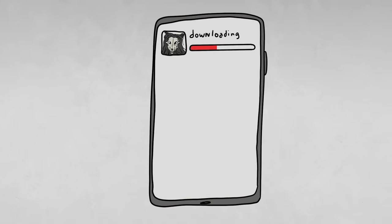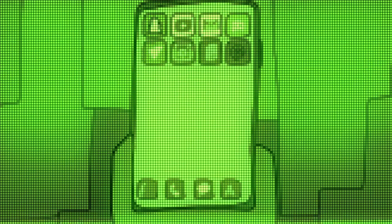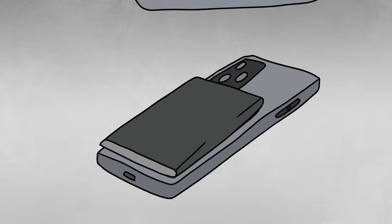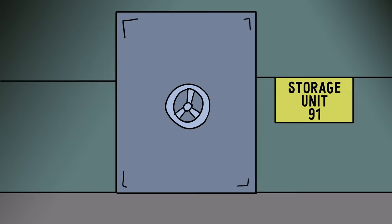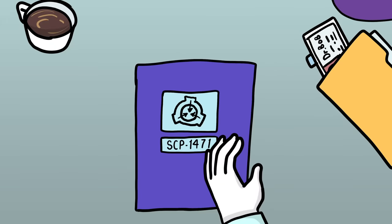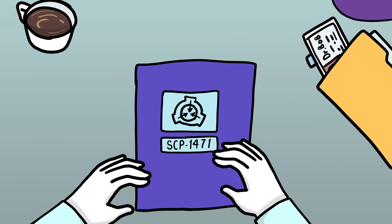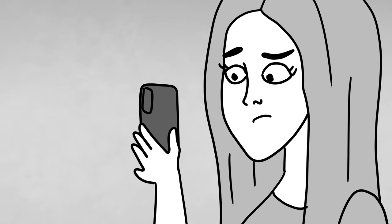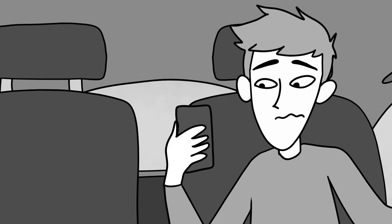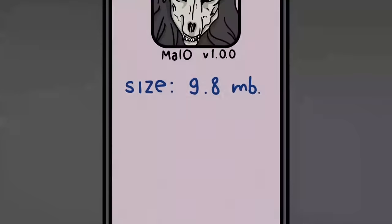All mobile devices that are found to have Mallow version 1.0.0 installed on them are to be confiscated and analyzed for any potential information as to who might have created the application, as well as leads for other devices that may have been infected. Following this investigation, the device's batteries are to be removed and the device placed in Storage Unit 91 at Research Site 45. Additionally, all online application stores for mobile devices are to be monitored to prevent unsuspecting users from inadvertently downloading the anomalous software. Any individuals who are suspected of having downloaded SCP-1471 will have their device targeted by a self-uploading malware that can disable it until it's able to be seized by Foundation agents.